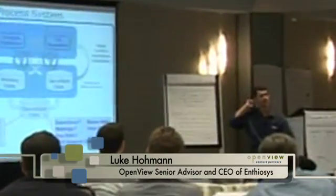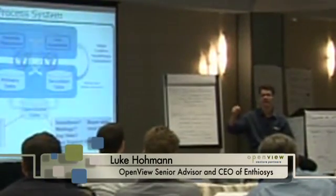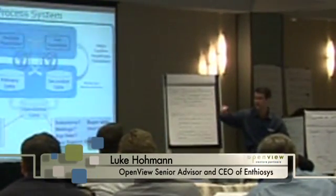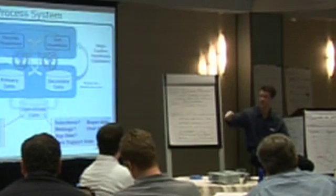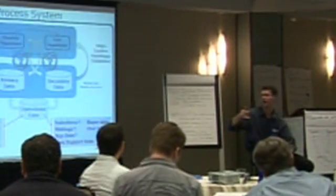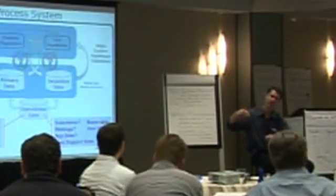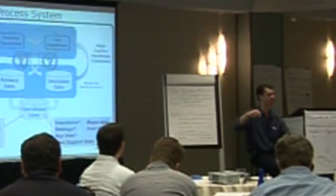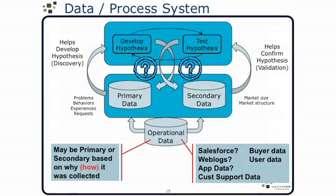We typically recommend when we do research with clients that we start with secondary data — find out the big universities, find out who they are, then call them on the phone. So typically you're going to execute your secondary data first. This covers market size and structure, and it helps confirm the hypothesis, which is kind of a validation stage.